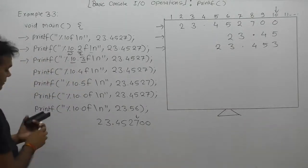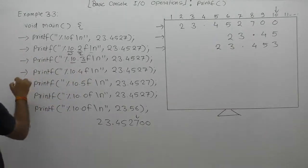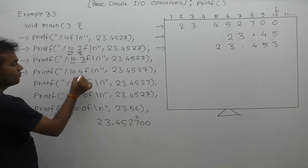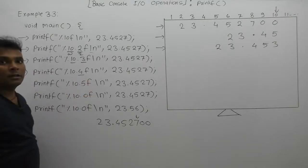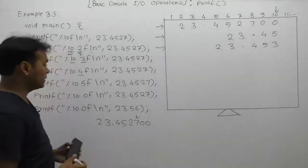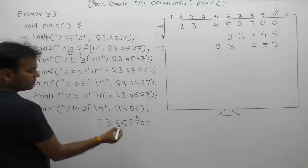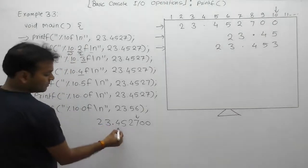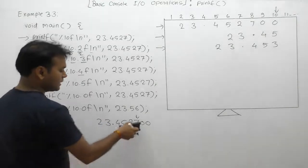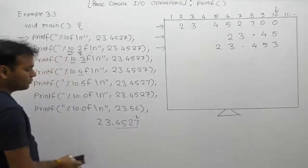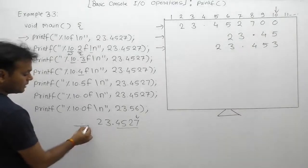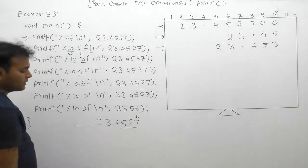Again we are displaying the same number, but in the form of 4 precision value. Here we are supplying precision value as 4. According to 4 precision value, we are taking exactly 4 digits after the decimal point. The total number of characters becomes 7, therefore 3 spaces will be filled.